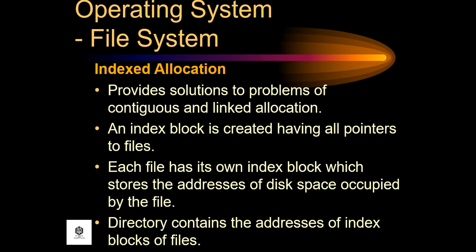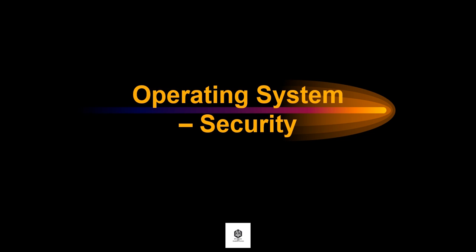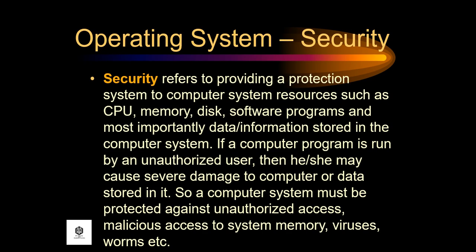Index allocation provides a solution to the problems of contiguous allocation. An index block is created having all pointers to file blocks. Each file has its own index block which stores the addresses of the space occupied by the file. The directory contains addresses of index blocks of files.